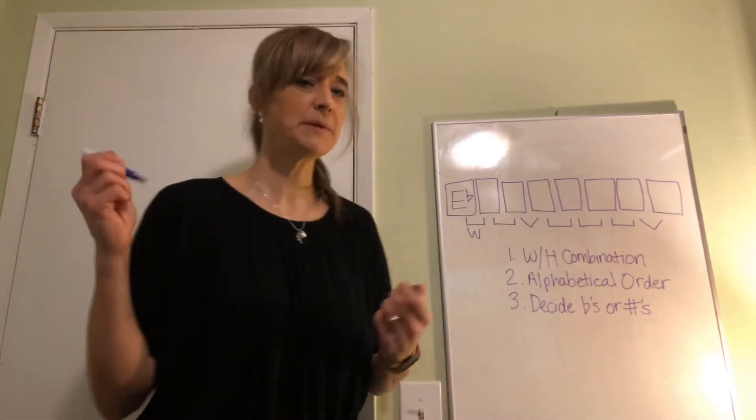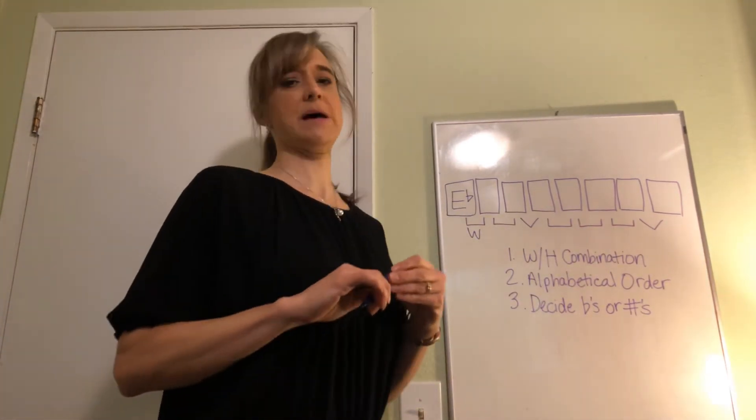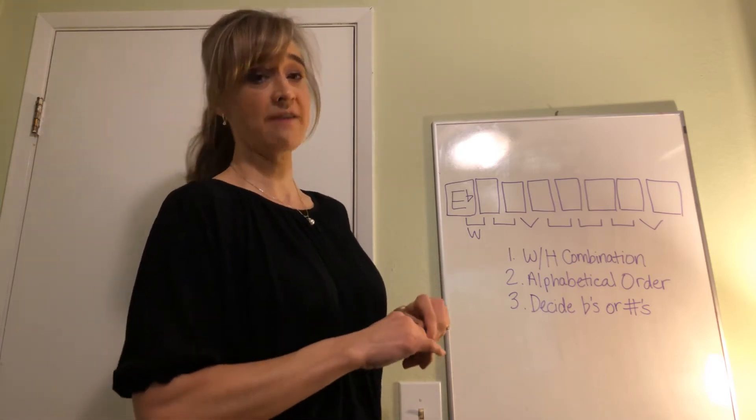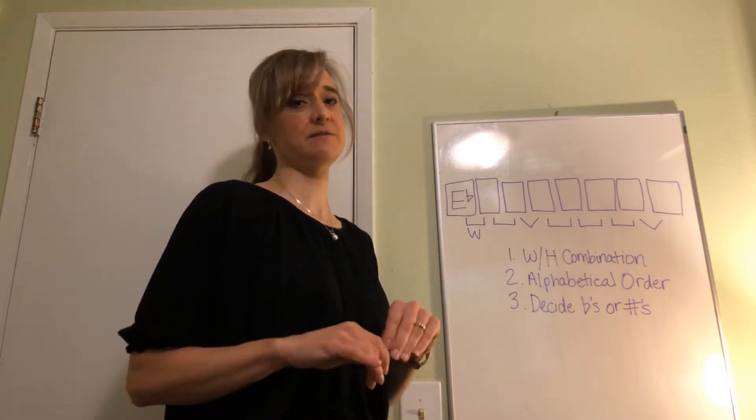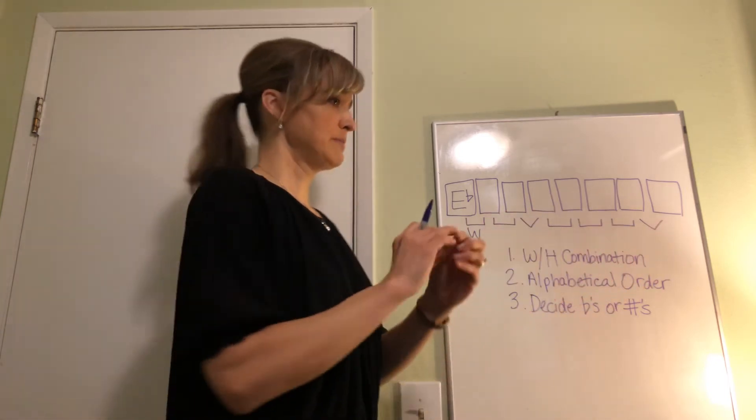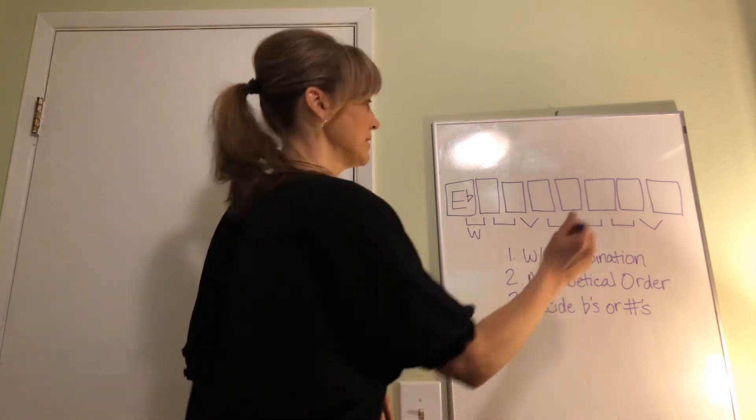Because how many letters are in the musical alphabet? A, B, C, D, E, F, G - no H's. So there's seven. By the time you get to the end, you've repeated the first letter. So let's put that in first.